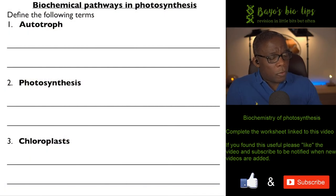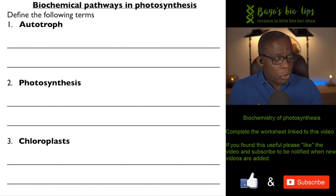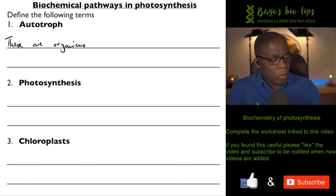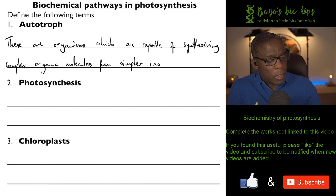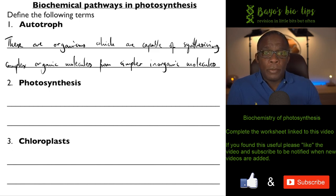First we'll start off by looking at some key terms that you should know in order to understand this topic. The first is the word autotroph. These are organisms which are capable of synthesizing complex organic molecules, for example glucose, from simpler inorganic molecules such as carbon dioxide and water. One example of a process used by autotrophs is photosynthesis.